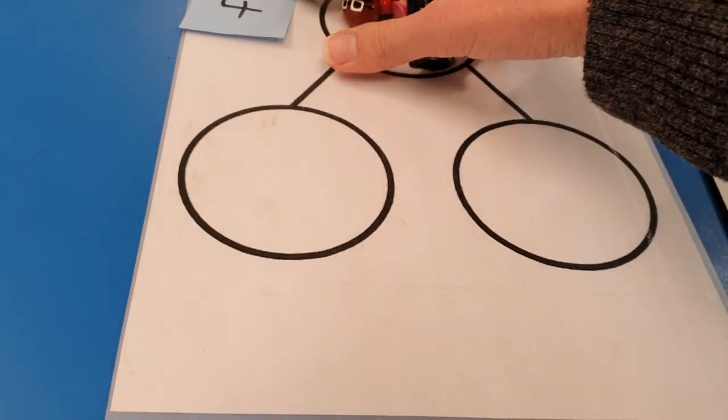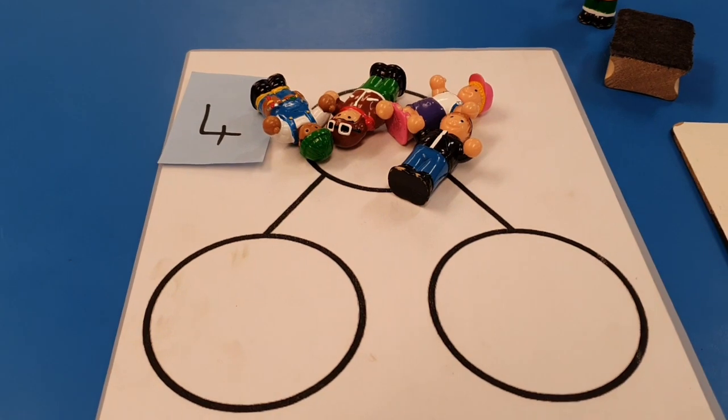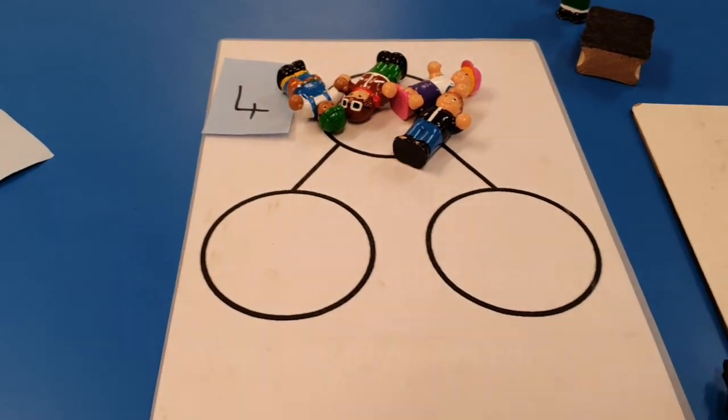And then what happens when you do four and zero? Well, there's no more to add, so it's just four. There we go. Have fun exploring with your part-whole model.